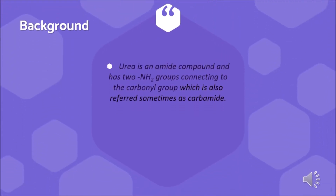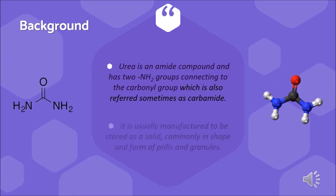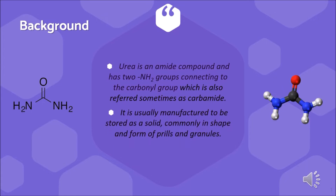Urea is an amide compound and has two NH2 groups connecting to the carbonyl group, which is also referred to sometimes as carbamide. It is usually manufactured to be stored as a solid, commonly in the shape and form of prills and granules.